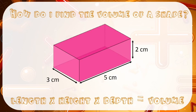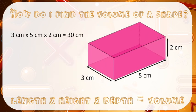Looking at this shape, we can see that we have a depth of 3cm, a length of 5cm, and a height of 2cm, so that means I have to multiply those three numbers together. I've multiplied 3 and 5 together to make 15, and then multiplied the answer by 2 to get 30. Remember, because you're finding the volume, it is 30cm cubed.